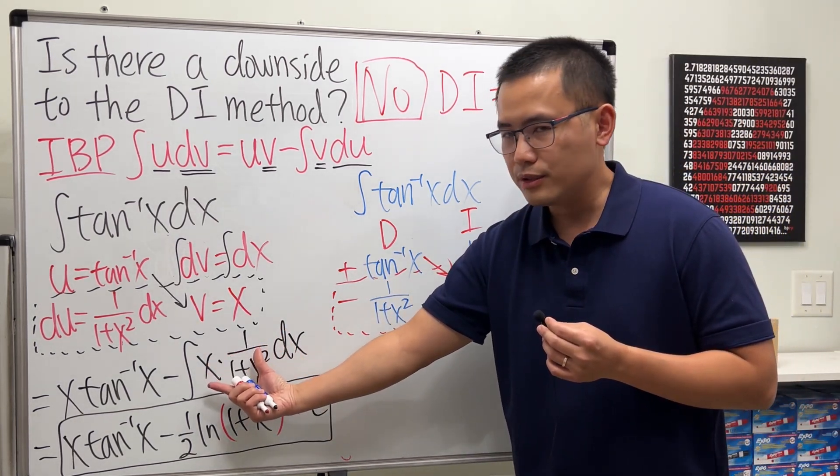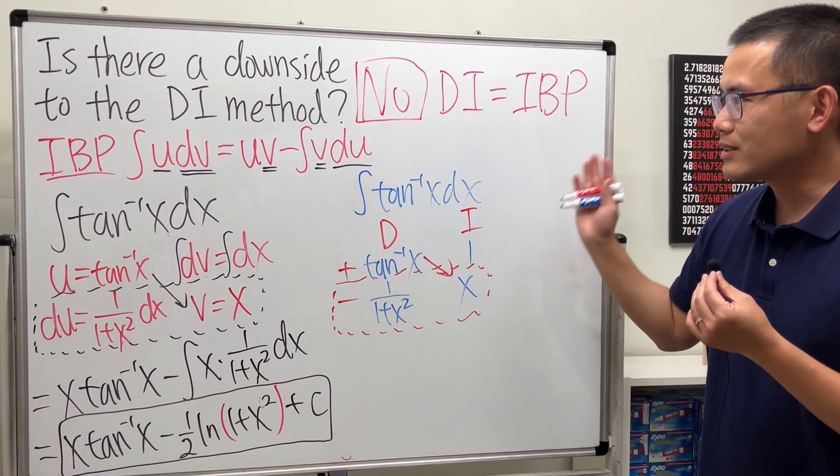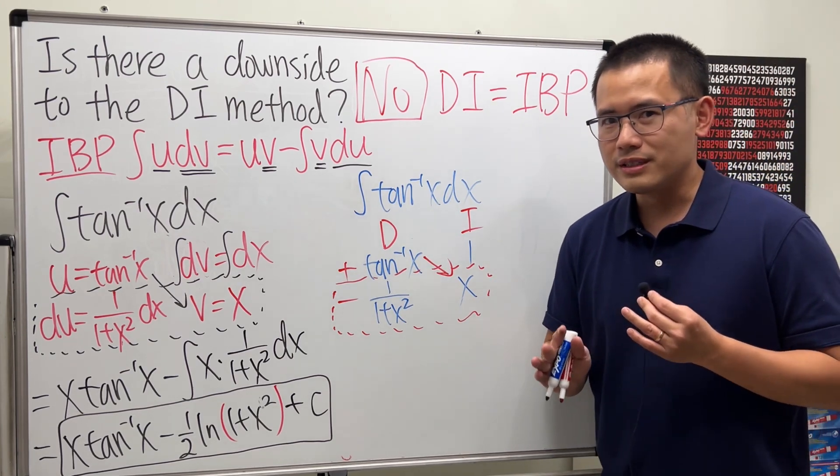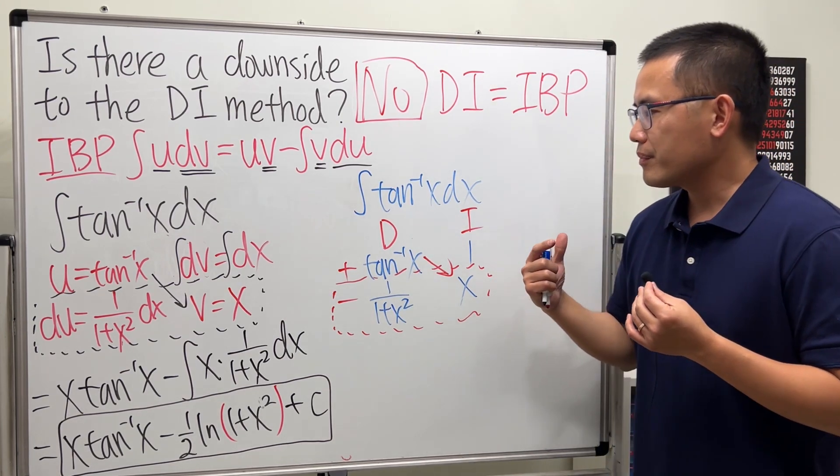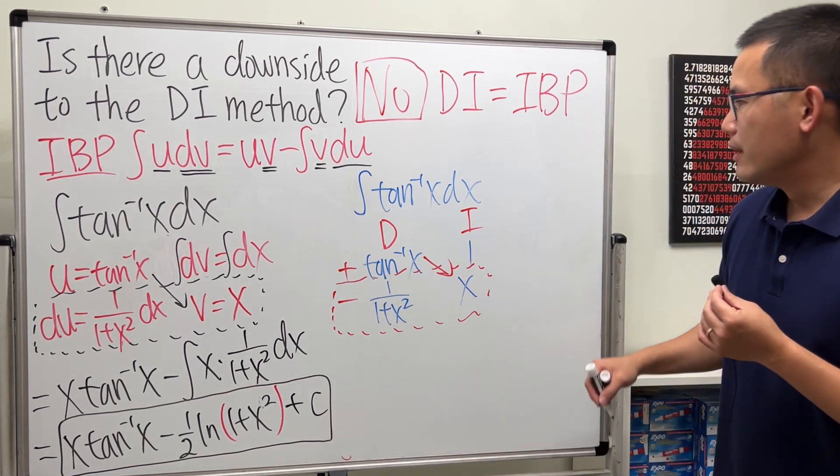And then, minus the integral of the product of this and that. And then, again, this right here. Just do it with the regular u-sub. So, this right here is totally the same as integration by parts. It's just an easier way to organize all your work.